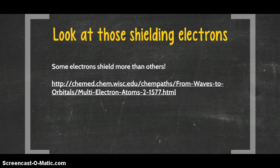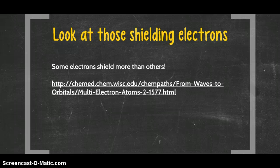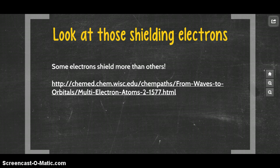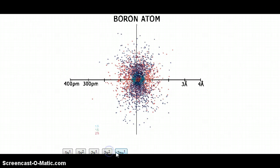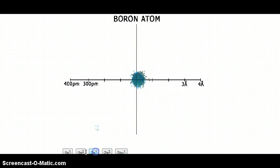Now some electrons shield better than others, and that's if the electrons get in the way between the nucleus and the outer electrons. So let's remind ourselves what orbitals look like. Here we have a boron atom, and I'm going to make it a little simpler and take some of these away.